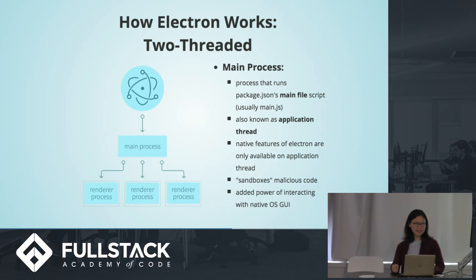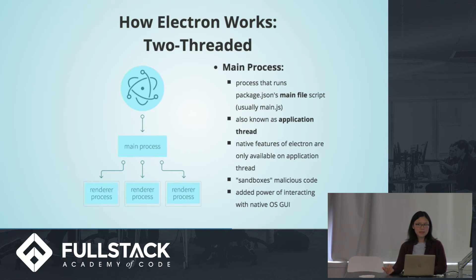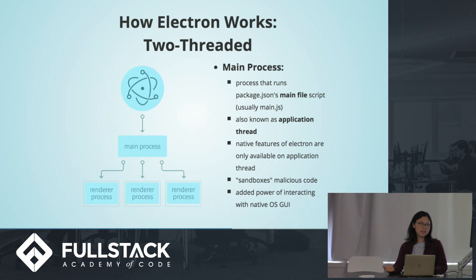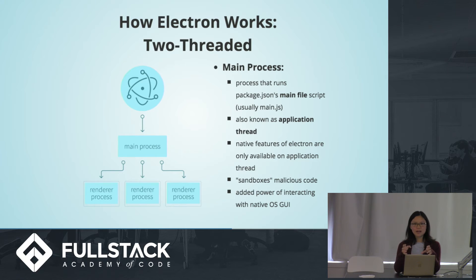Here's how it works. There are two processes. One is the main process, and the other is known as the renderer process. The main process is the one that runs the package.json's JavaScript file, which is usually titled main.js. This is also known as the application thread. Most of the native features of Electron are only available on this application thread. The benefit is that it sandboxes malicious code or viruses or bugs that typically appear in the browser, containing them in your main process — which is a good feature for the user.